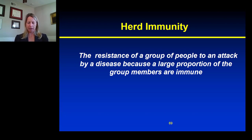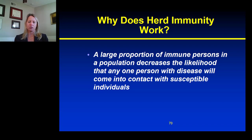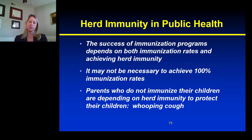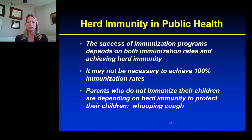I want to talk now about the concept of herd immunity. This is the idea that, given a sufficient level of immunity to a particular disease in a population, you can ensure that all people in the population are immune to being attacked by that particular disease. A large enough proportion of immune persons in a population will ultimately decrease or eliminate the likelihood that any person with disease will come into contact with a susceptible person. From a public health perspective, the success of herd immunity via immunization programs depends upon both the rate at which the population is immunized, as well as how effective the immunization itself is.